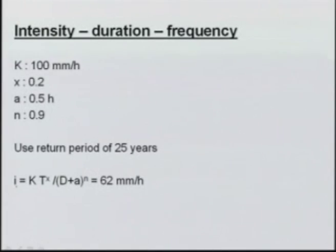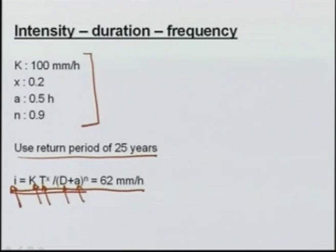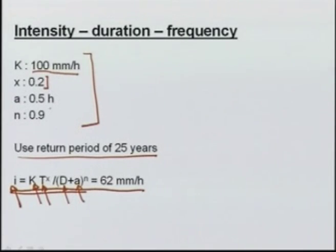For a rainfall duration of 3 hours, we find the intensity using an equation of the form i = k·T^x / (d + a)^n, where k is a catchment-dependent factor, T is the return period in years, x and n are exponents, d is the duration in hours, and a is another constant. Assuming k = 100 mm/hr, x = 0.2, n = 0.9, and a = 0.5 hours, for a 25-year return period and d = 3 hours, we get an intensity of 62 mm/hr.